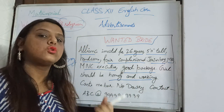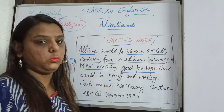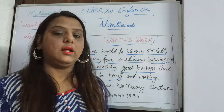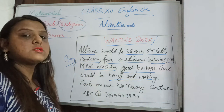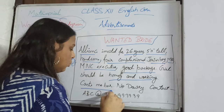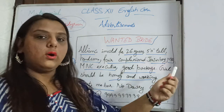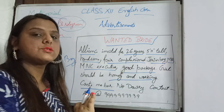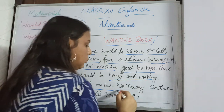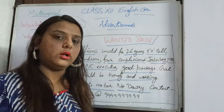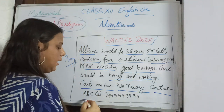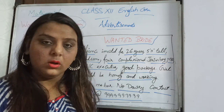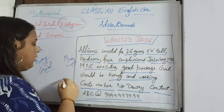Now, what kind of girl do you want? The ad says 'girl should be homely and working' — meaning she should not only sit at home but should be working, and homely means she knows how to manage the home. Then you mention your conditions: although you are a Jain boy, you specify 'caste no bar' — any caste person can apply. 'No dowry' — dowry will not be entertained at all. And then contact details, which are very essential to write.